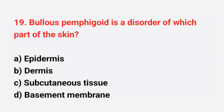Question number 19: Bullous pemphigoid is a disorder of which part of the skin? The right answer is option D, basement membrane.